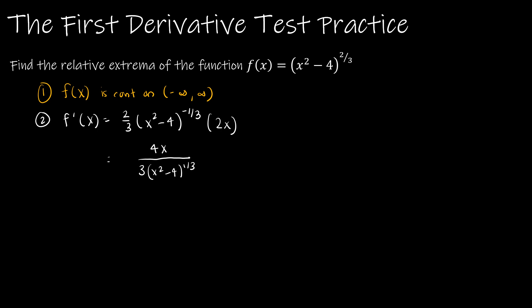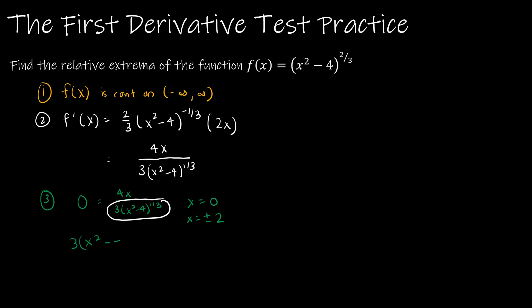Now let's find the critical numbers. Critical numbers are where the derivative equals zero or is undefined. Setting the numerator equal to zero gives 4x = 0, so x = 0. We also find where the derivative is undefined — when the denominator equals zero. Setting 3(x²−4)^(1/3) = 0, dividing by 3, cubing both sides, and adding 4 gives x² = 4, so x = ±2. Our critical numbers are x = −2, 0, and 2.